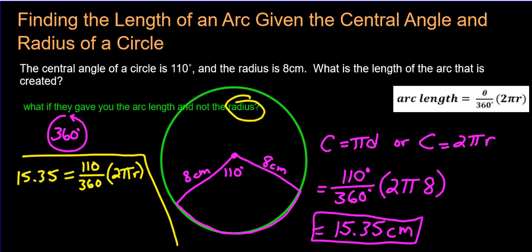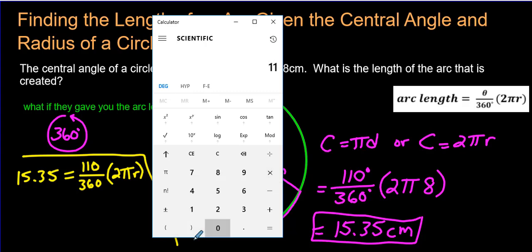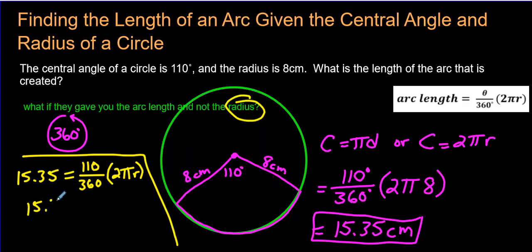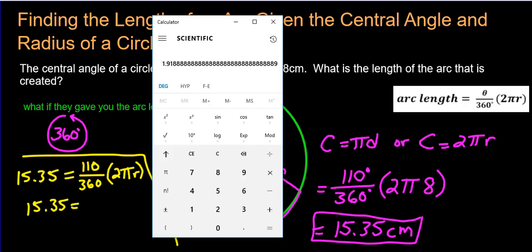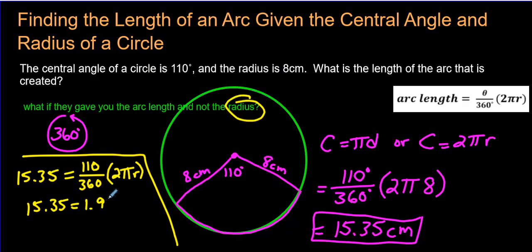Well, take 110 divided by 360. You get this decimal here, and I want to get rid of this decimal. I want to bring it over to the other side. We're multiplying this decimal by all of this. So I'm going to go this decimal times 2 times 3.14. I'm going to just round it off just so that it's a little easier to see. So we have 15.35 is equal to 1.919. I just rounded it off to three decimal places, and we still have r. What did I do? I took this divided by this, and I multiplied by 2, and then I multiplied by 3.14, and now I have this.